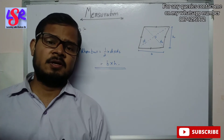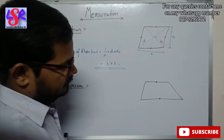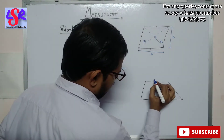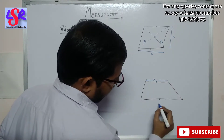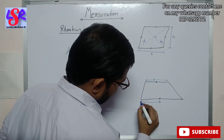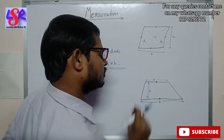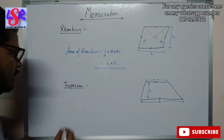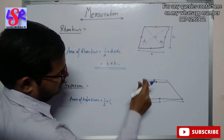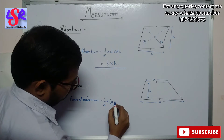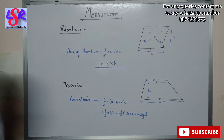Next we have the trapezium. A trapezium has one pair of opposite sides that are parallel. To find the area, we label the parallel sides as 'a' and 'b', and the height is the distance between the parallel sides. The area of a trapezium equals 1/2 into the sum of the parallel sides (a + b) into height. This can also be written as half into sum of parallel sides into height.